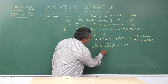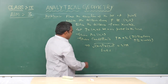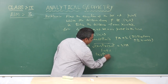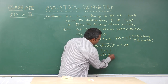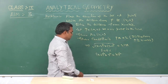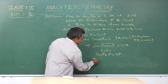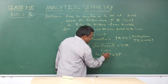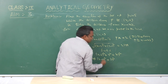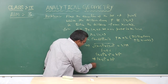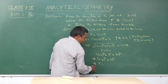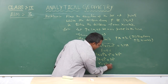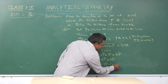Now squaring on both sides: (x-4)² + y² equals 4y². That implies (x-4)² equals 4y² - y², which is 3y². That is, x² - 3y² - 8x + 16 equals 0.